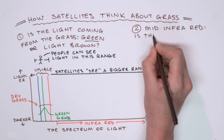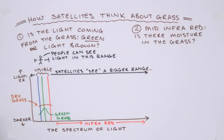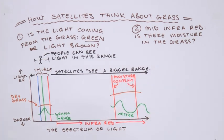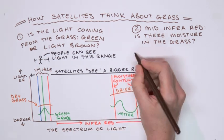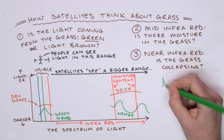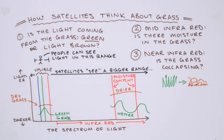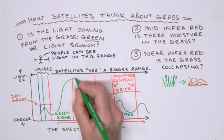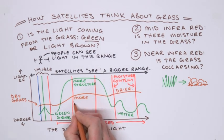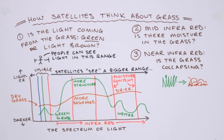Looking at the infrared area of the graph, at wavelengths we cannot see, water in living grass absorbs some radiation in the mid-infrared range. Satellites can detect moisture content using these mid-infrared wavelengths, because green grass absorbs more of this radiation. At near-infrared wavelengths, the satellite can detect changes in living grass that occur as it dehydrates and starts to collapse physically. This signal from green grass is much stronger than the signal from dry grass at these wavelengths, and the satellite measures these changes.